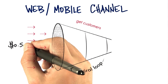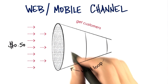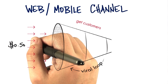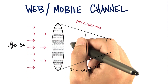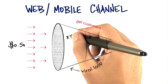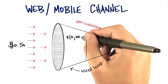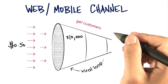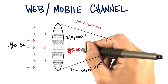Let's assume I'm using Google AdWords and I'm paying 50 cents for pay per click. Let's assume my campaign at 50 cents each gets me 10,000 people to come look at my website. 50 cents times 10,000 — that cost me $5,000.